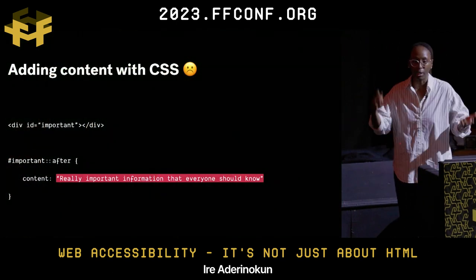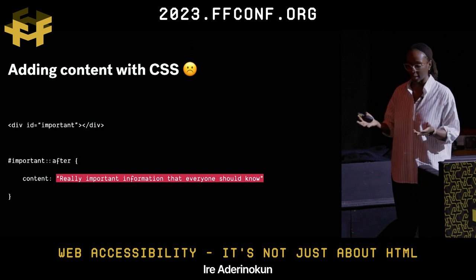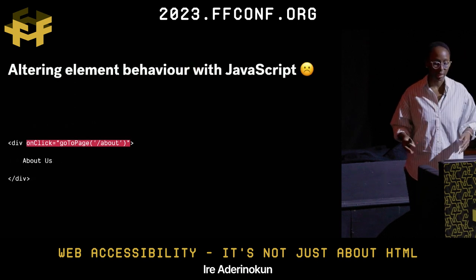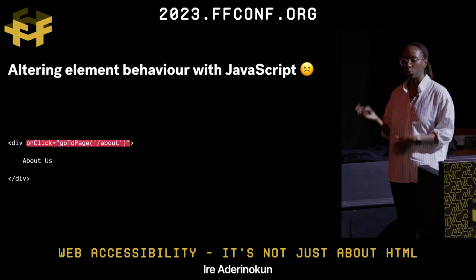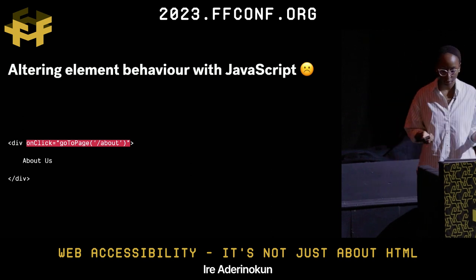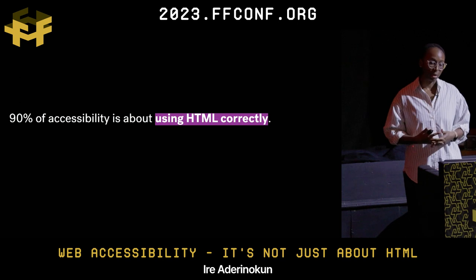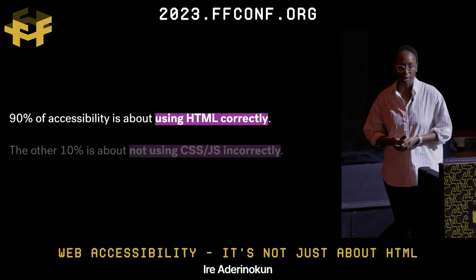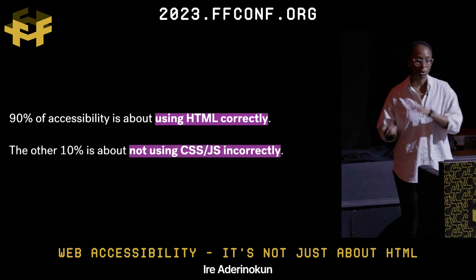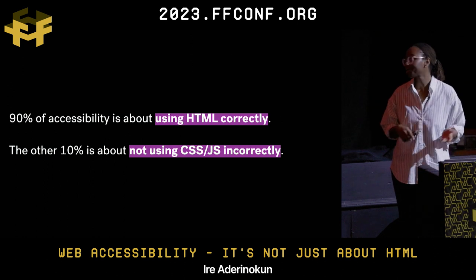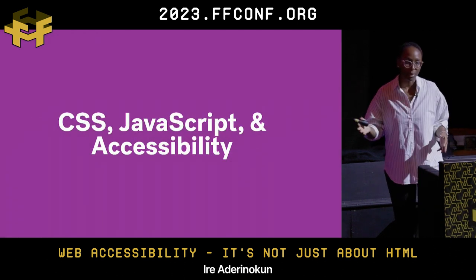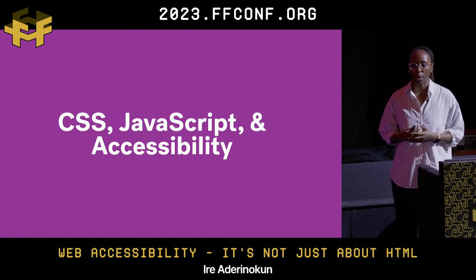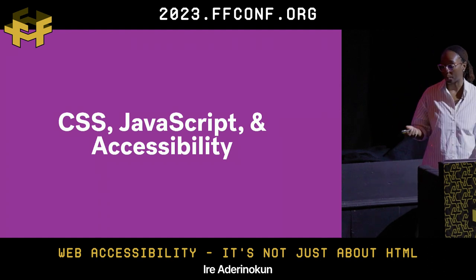With CSS, we can add really important content via CSS — people do this for some reason. Or with JavaScript, you can completely alter element behavior or make something do something it shouldn't. But at the end of the day, I'd say about 90% of accessibility is about using HTML correctly, and the other 10% is about making sure you don't use CSS and JavaScript incorrectly. That's basically what this talk is about — how to use CSS and JavaScript in a way that doesn't impact, or maybe even helps, web accessibility.